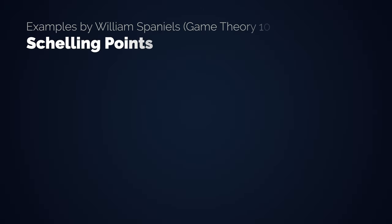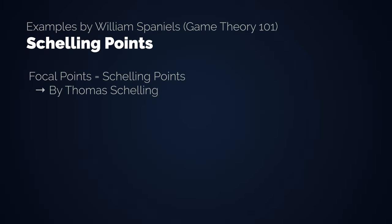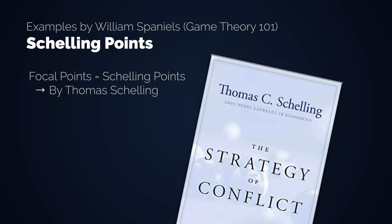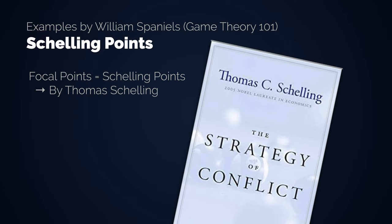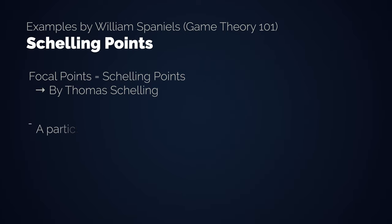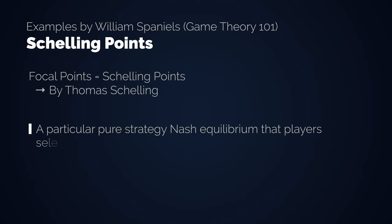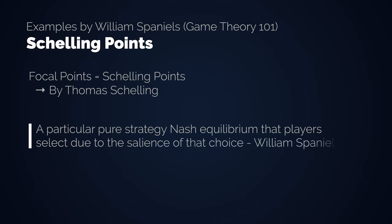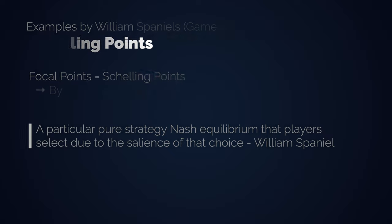A possible solution to the question are Focal Points, also known as Schelling Points, as formulated by Thomas Schelling in his book The Strategy of Conflict. The concept of Schelling Points is actually really easy to understand. A Schelling point is a particular Pure Strategy Nash Equilibrium that players select due to the salience of that choice — meaning players converge to the strategy that comes to their minds the easiest, the most obvious solution.